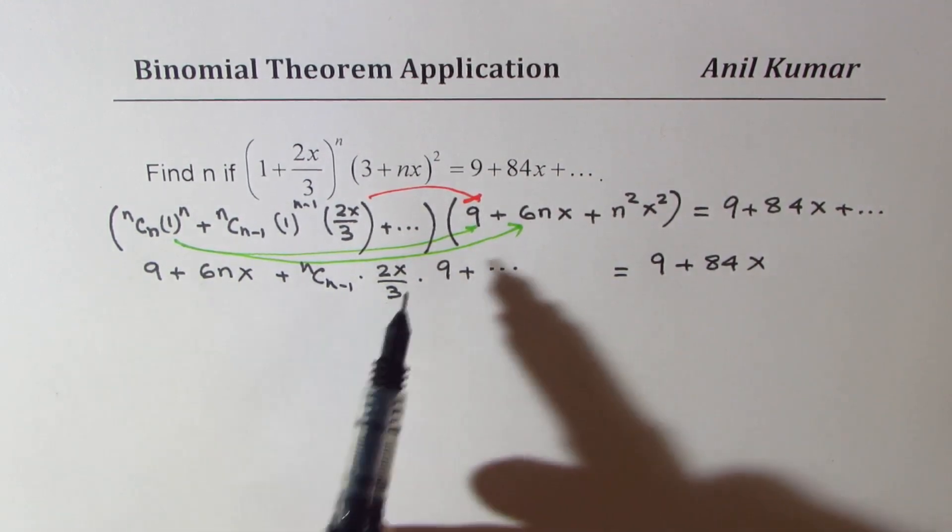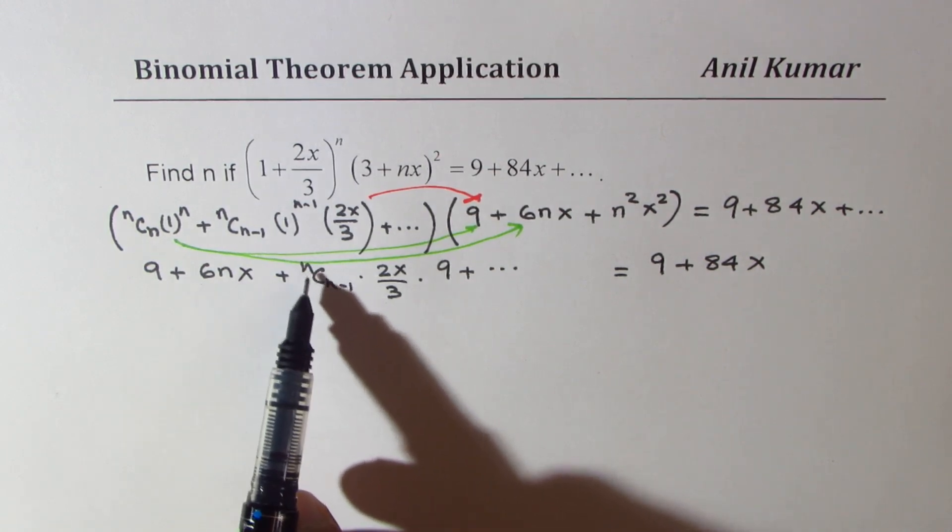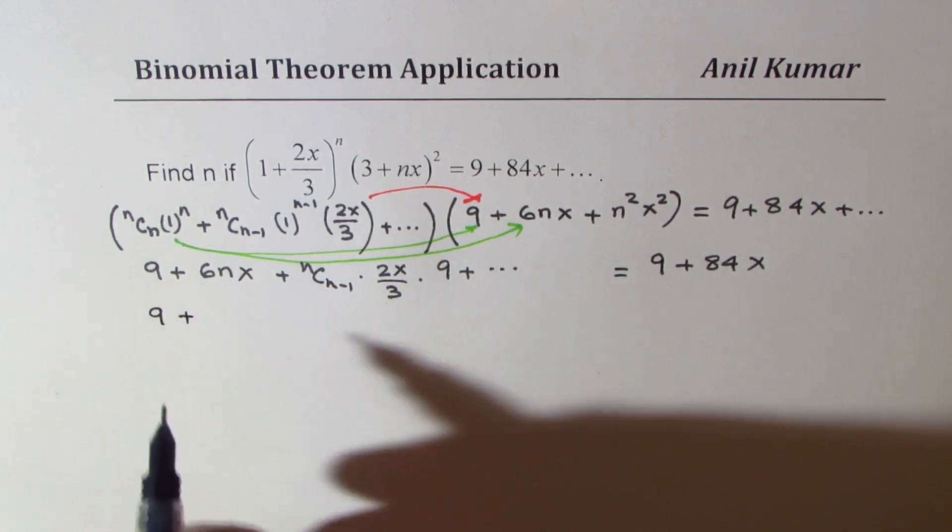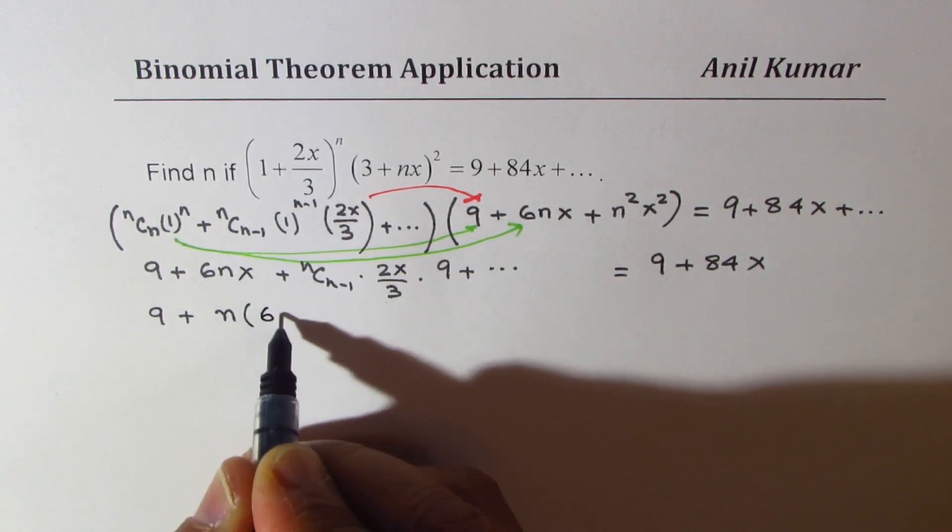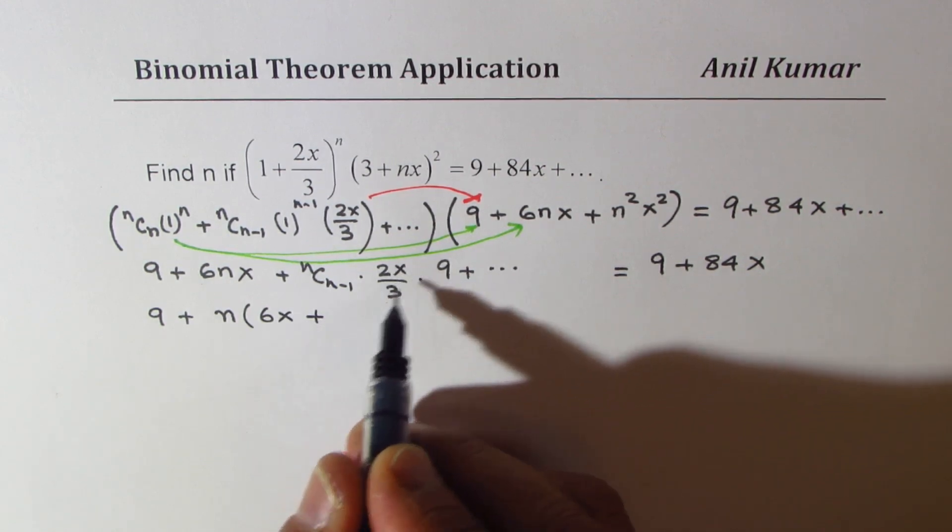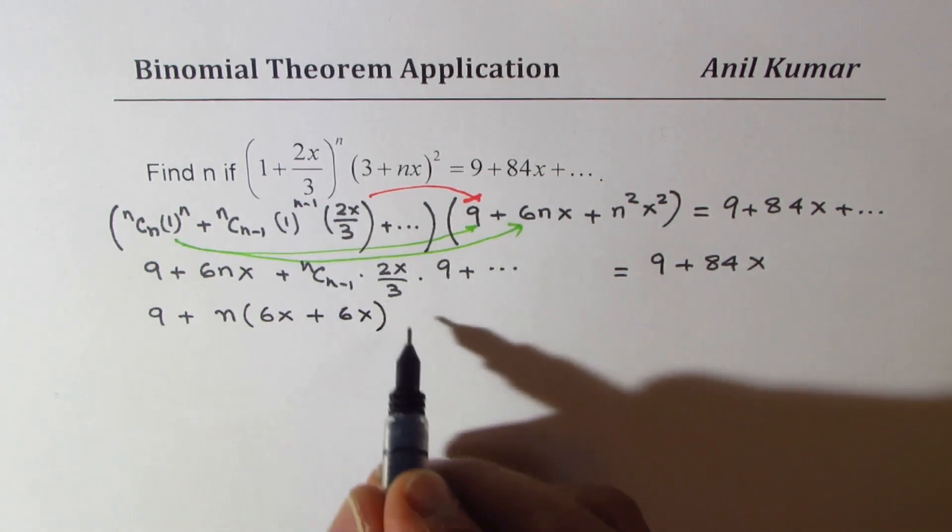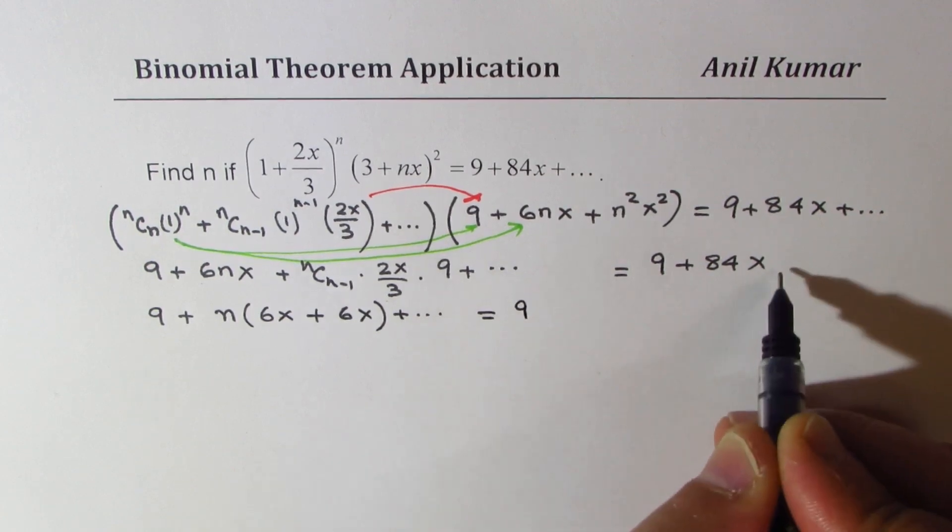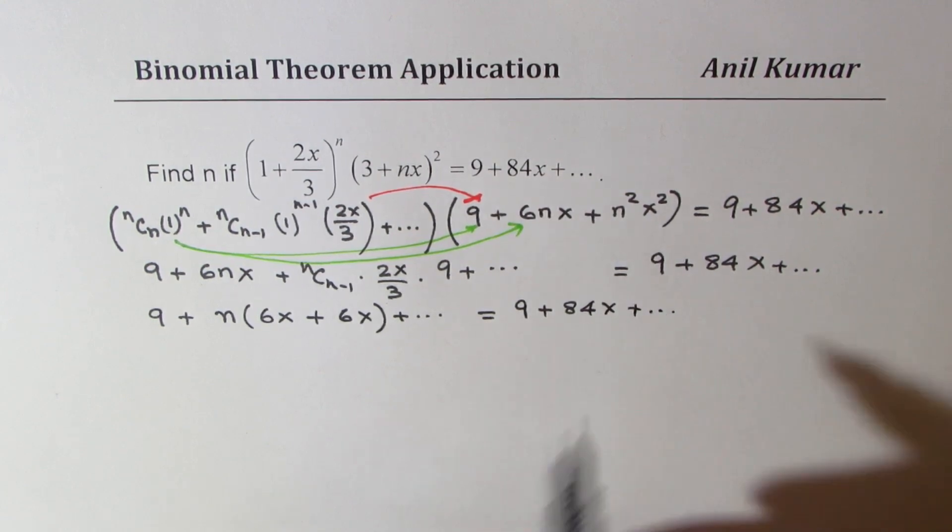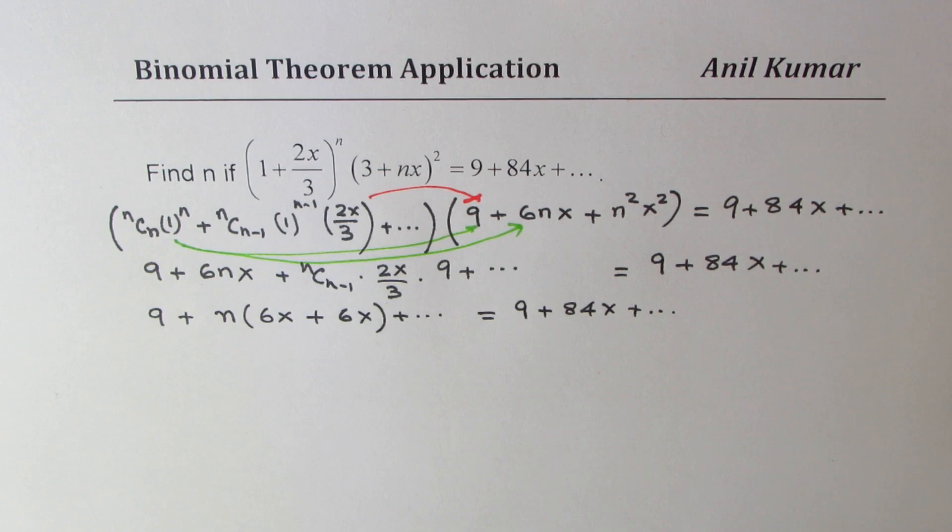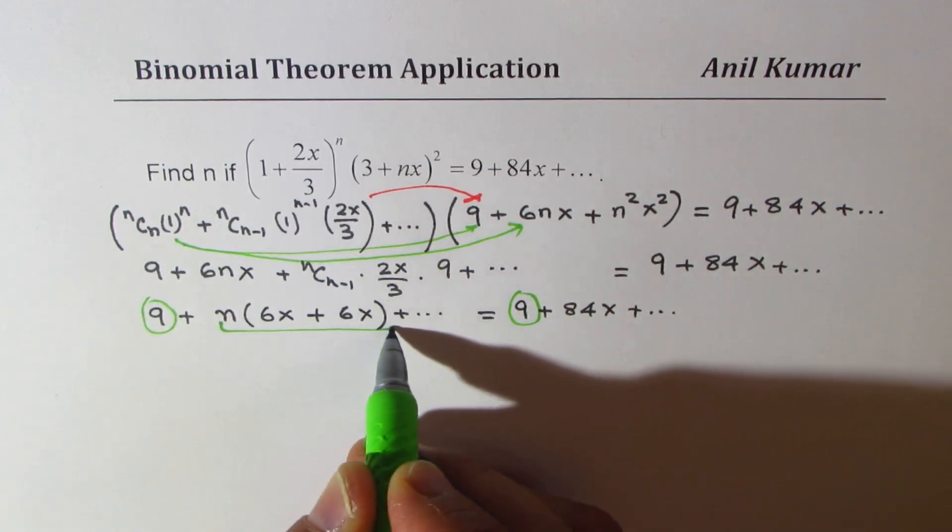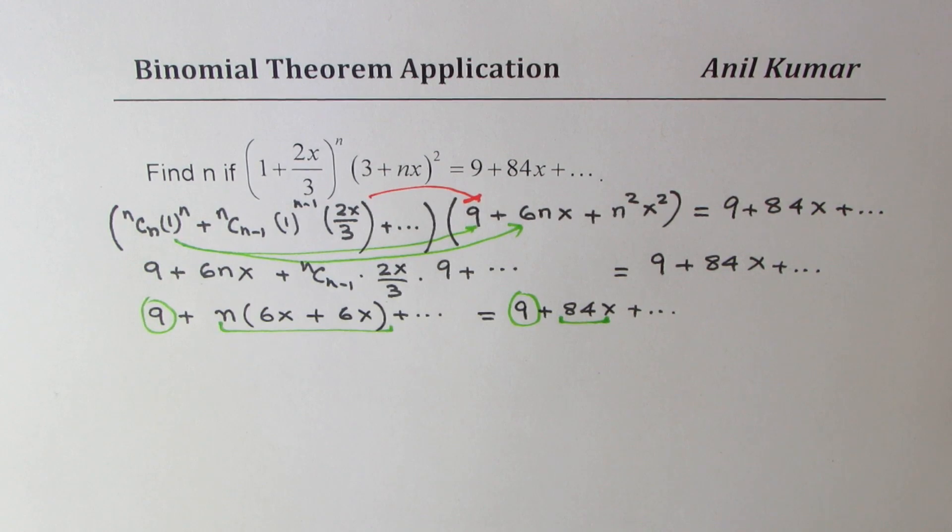Now if you compare, 9 is already there. As far as n is concerned, nC(n-1) is also n. So we can take n common, right? So we have 9 plus, here we can take n common. We get 6x plus, here we get 9 divided by 3 is 3. So we get again 6x plus so on is equal to 9 plus 84x plus so on. So if you compare, 9 is equal to 9, that's perfectly fine. So this is okay.